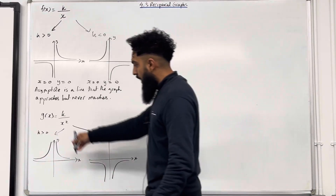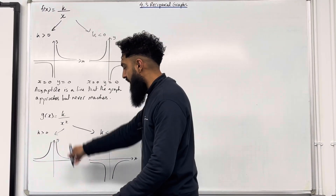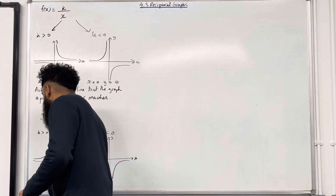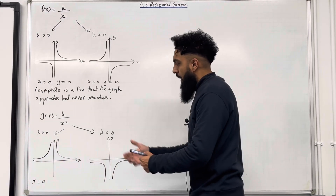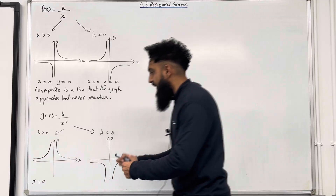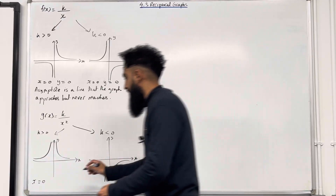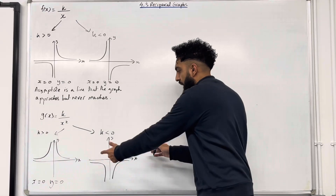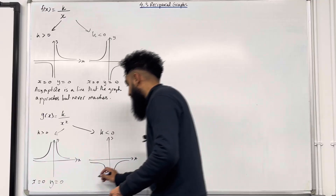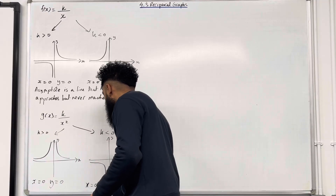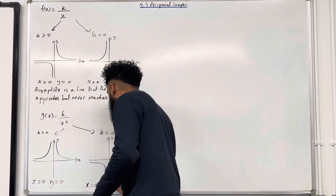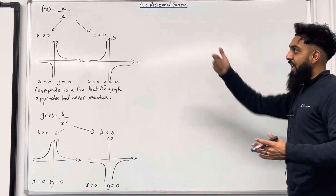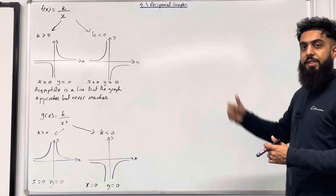The equation of the y axis is x equals 0 — that's my first asymptote. The equation of the x axis is y equals 0 — my second asymptote. The same applies over here: we have x equals 0 and y equals 0. That there, ladies and gents, is the key facts for this particular section.